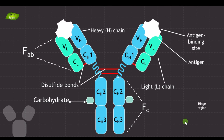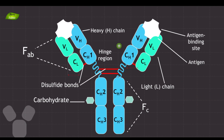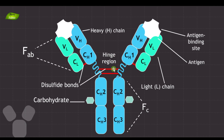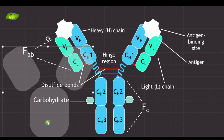Next is the hinge region — this is the most flexible part of the antibody. The hinge region is a flexible segment that connects the FAB region with the FC region. This flexibility allows the antibody to undergo conformational changes. When antibodies can undergo conformational changes, they have a higher ability to interact with antigens, helping with optimal antigen binding as well as effective immune functions.